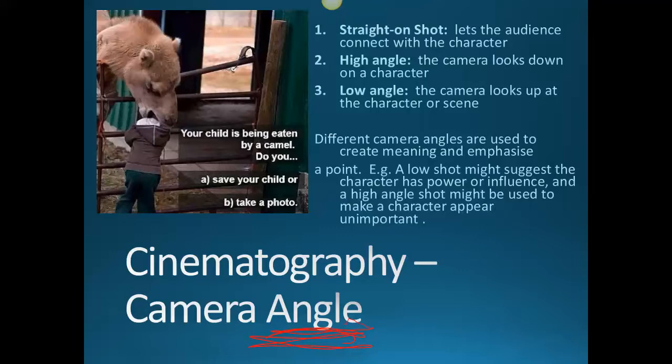Then there's a low angle shot, which is used quite subtly in most of Rear Window to give Lisa a slight upper hand. However, occasionally it's used more dramatically — for instance in the Thorwald scene where Thorwald is just about to take on Jeff, it's used much more obviously. Camera angles are really good for talking about power plays.